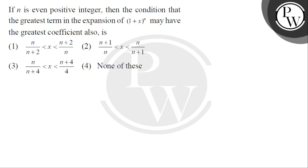Let's read the question: if n is an even positive integer, then the condition that the greatest term in the expansion of (1+x)^n may have the greatest coefficient. This expansion is (1+x)^n which equals nC0 + nC1·x^(n-1) + nC2·x^(n-2) and so on.